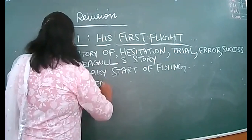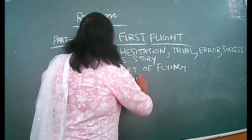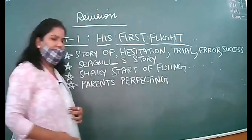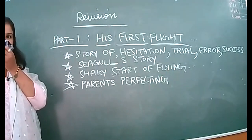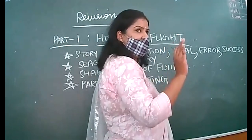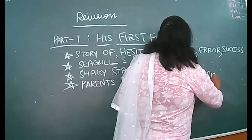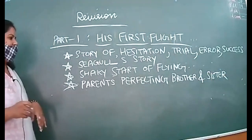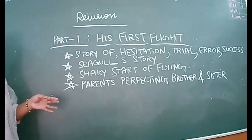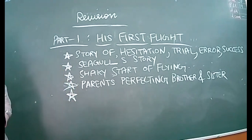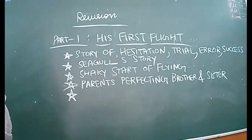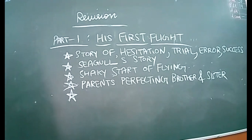Parents took charge of teaching all the children, but the young seagull is afraid while observing the others who are very casual. Brother and sister, also called siblings, were being perfected by the parents. Every parent wishes that all children become successful in life — they want equal achievements for both. So parents then try to perfect the seagull.